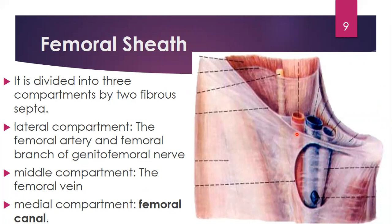To summarize: the medial compartment contains the femoral canal, the intermediate compartment contains the femoral vein, and the lateral compartment contains the femoral artery — canal, vein, artery, from medial to lateral. Never forget that.